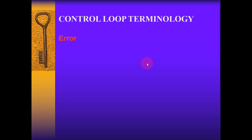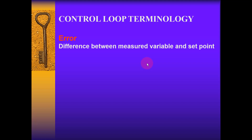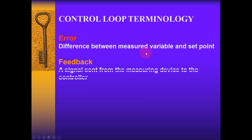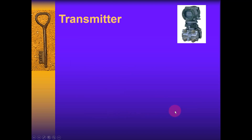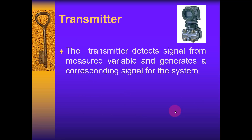Control loop terminology: Error is the difference between the measured variable and the set point. The measured variable is the process variable input. Feedback is a signal sent from the measurement device — for example, a level transmitter — to the controller. The final control element is a device that manipulates the process input to bring about changes in the control variable. A transmitter detects a signal from the measured variable and generates a corresponding signal for the system.